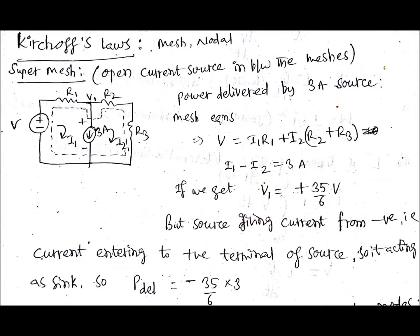So whatever be the notation initially that you have considered, you take it as it is. Finally you will get the proper signs. Here for voltage V1 you got plus 35 by 6, that is positive, and the current is also 3 amperes which is entering into the positive terminal. The power delivered is negative.